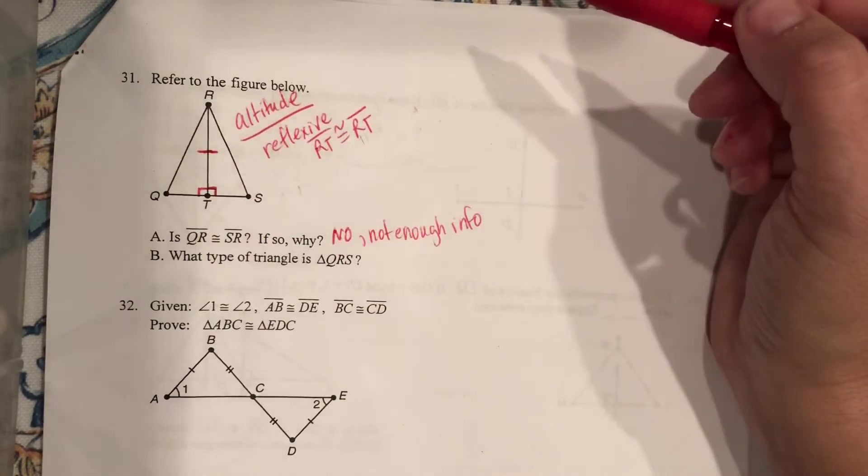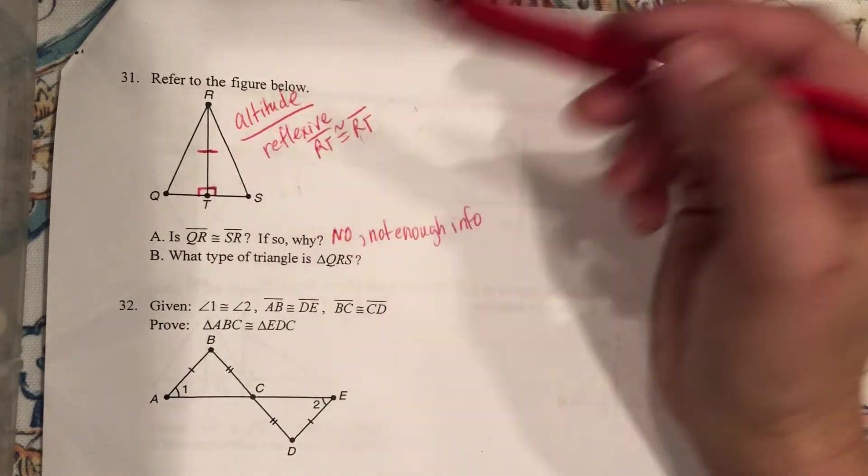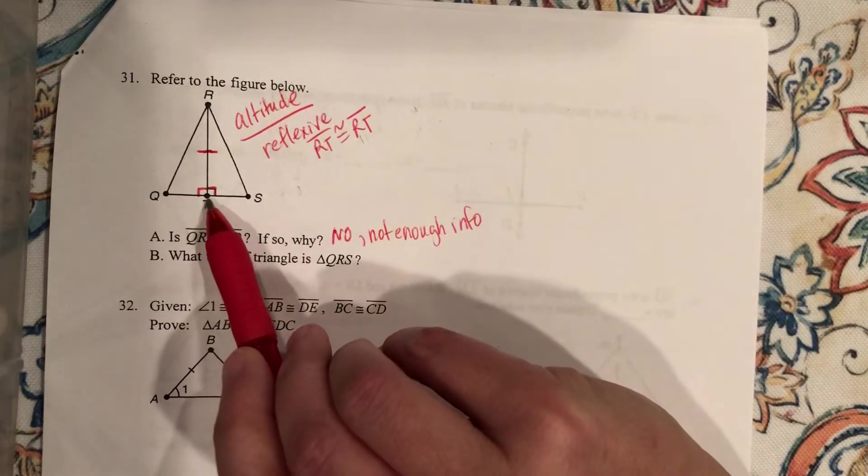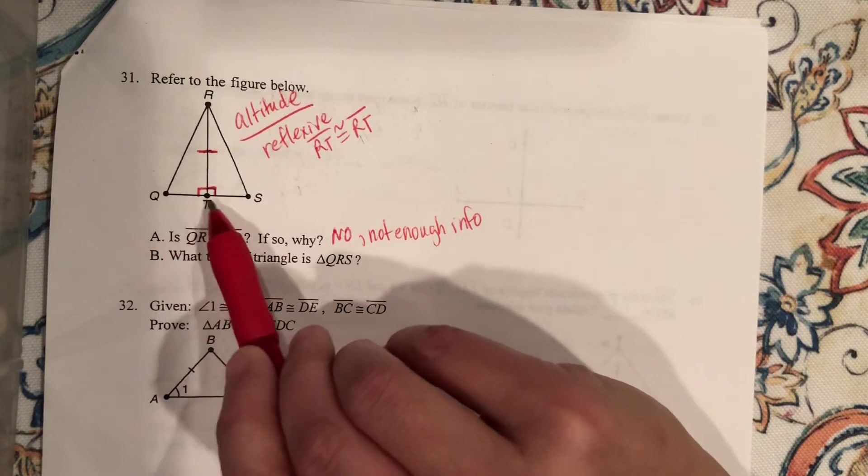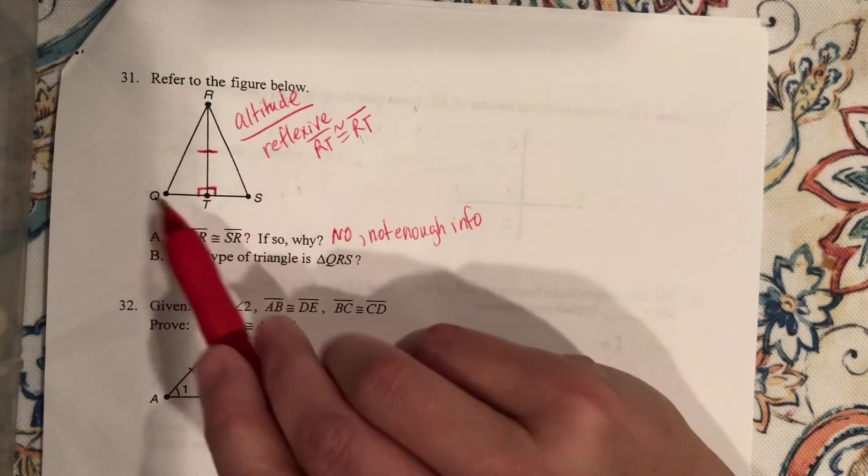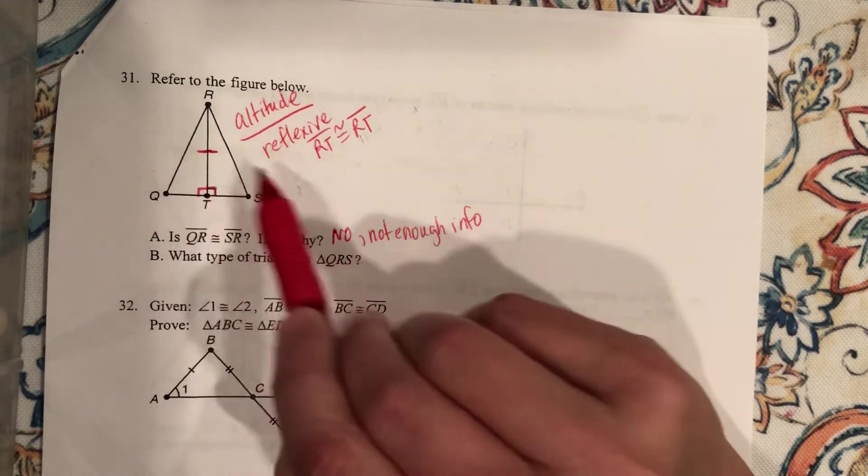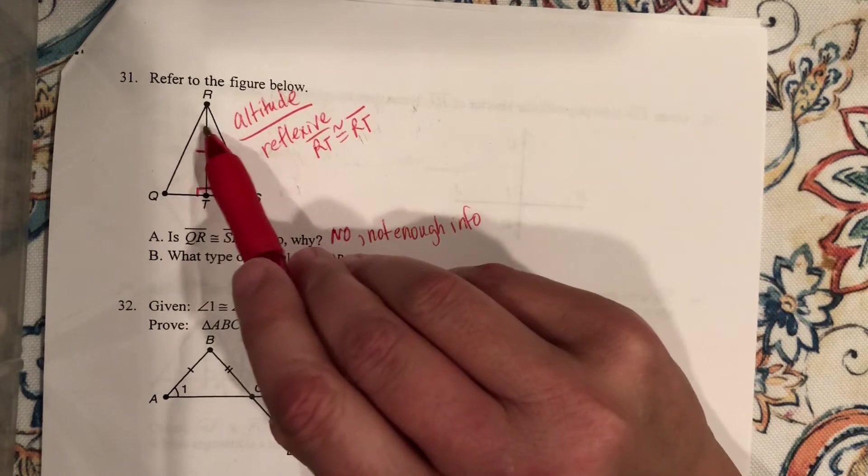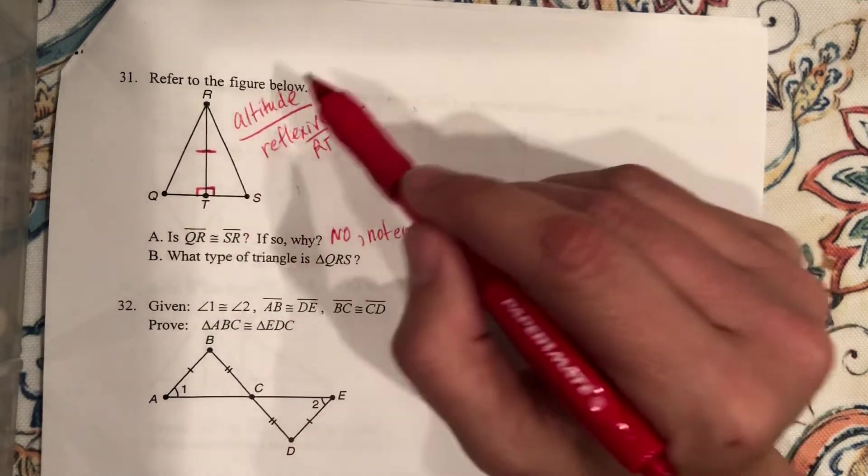I would need to know another piece of the triangle. I've got a side and an angle, but I don't have anything else. I don't have anything that tells me T is a midpoint, so I don't know if QT and TS are the same. If I knew QT and TS, I could say side, angle, side, and then use CPCTC to match these two.